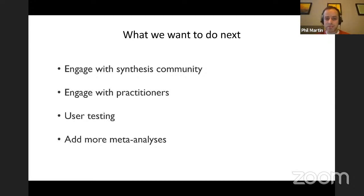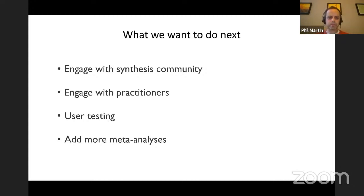We know the tool is currently bare-bones and quite ugly. We want to make it more user-friendly and simpler for users — we wouldn't want to provide them with so many different options. We also need to produce guidance to prevent P-hacking and data dredging so users aren't just coming up with the results they want by subsetting. We also want to scale it up so we have more meta-analysis topics available, allowing people to synthesize across a whole range of different problems in conservation.